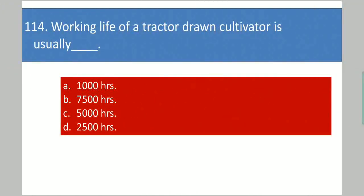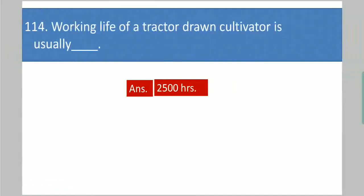Next question: Working life of a tractor-drawn cultivator is usually dash. Your options are: 1,000 hours, 7,500 hours, 5,000 hours, 2,500 hours. Your answer is 2,500 hours.